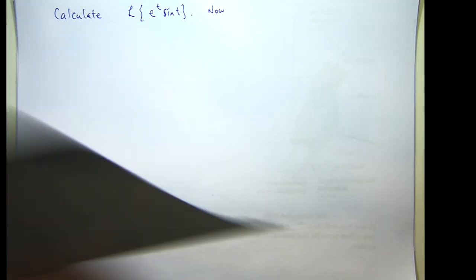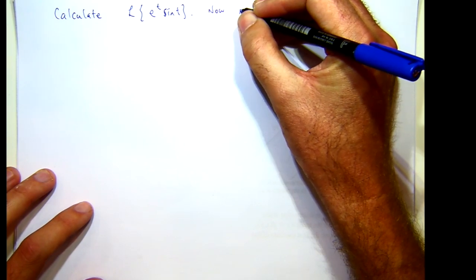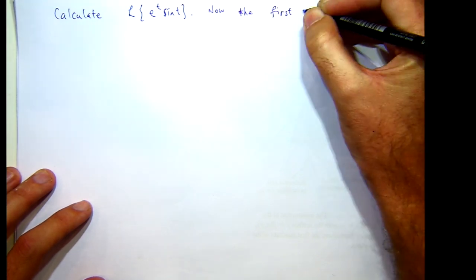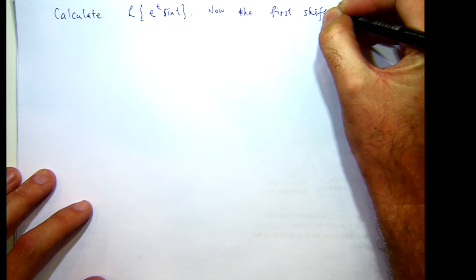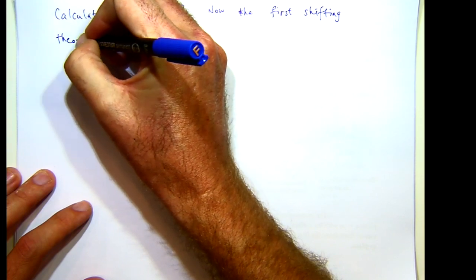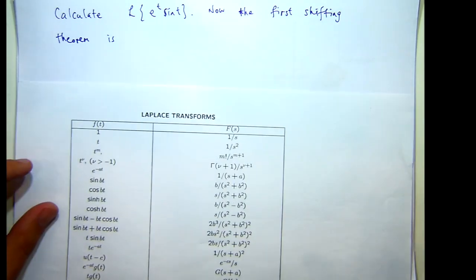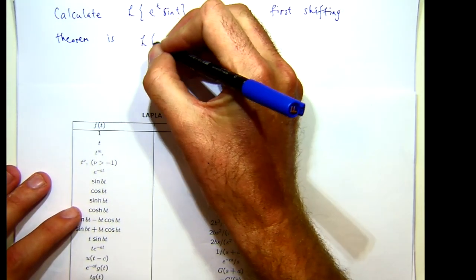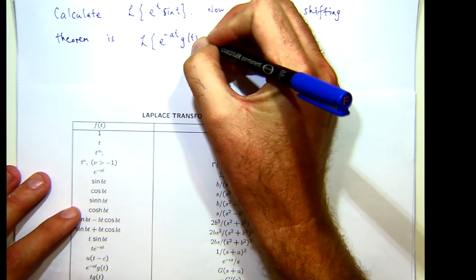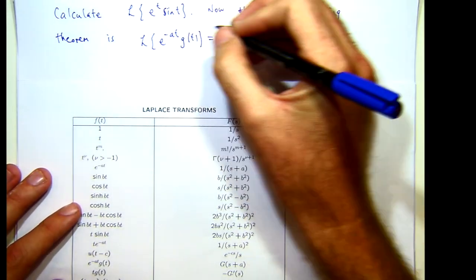This is the first shifting theorem. The first shifting theorem is the following: Laplace transform of this special product is this where big G of s is the Laplace transform of little g of t.